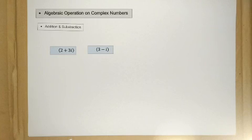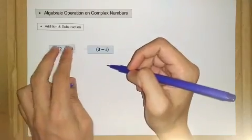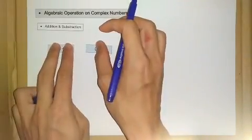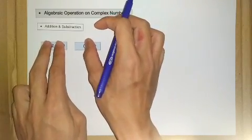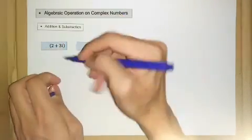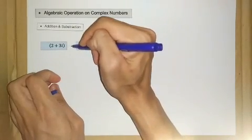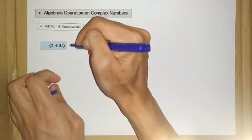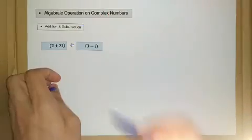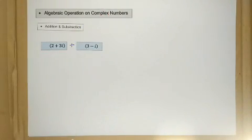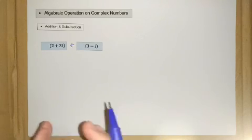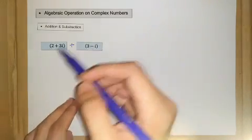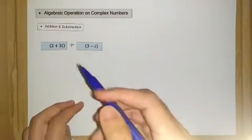So what we want to do here is we want to add these two numbers up. So what we do here for addition and subtraction is we just add the real part and the imaginary part respectively.